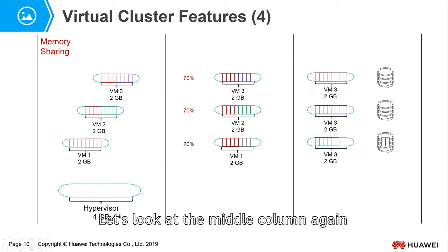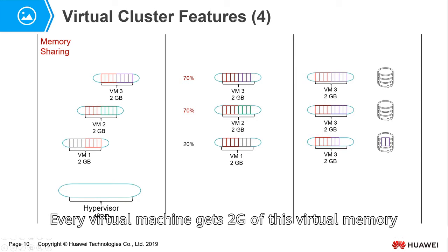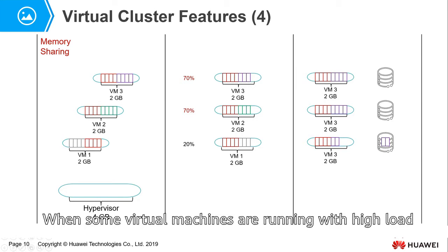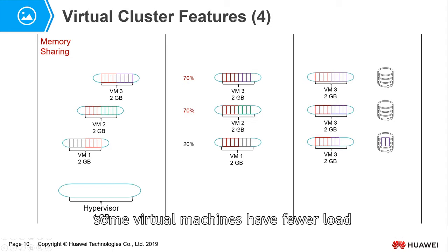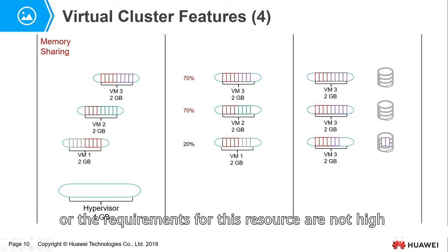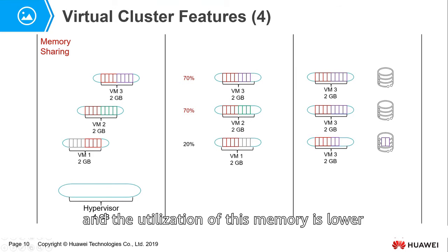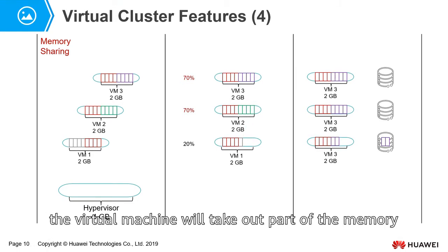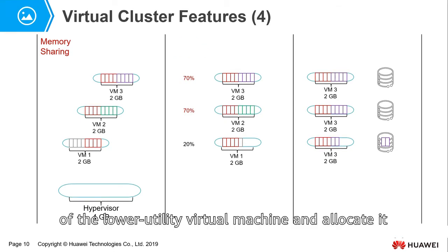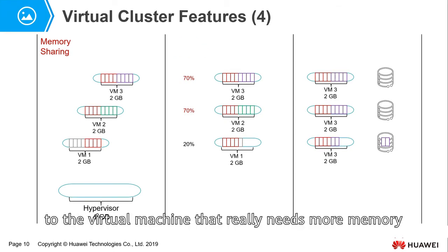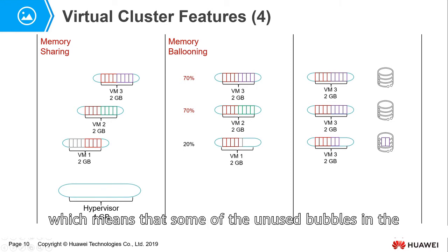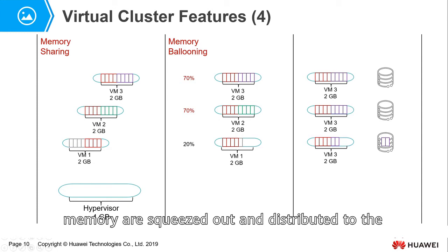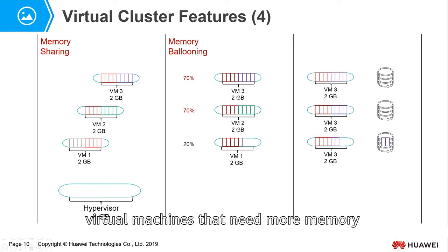Let's look at the middle column. Every virtual machine gets 2 GB of virtual memory. When some virtual machines are running with high load, their memory usage can be very high, reaching 70 to 80%, even 90%. However, some virtual machines have fewer loads and their memory utilization is lower. At this time, the system will take out part of the memory from the lower-utilization virtual machines and allocate it to the virtual machines that really need more memory. This is called memory ballooning — unused memory bubbles are squeezed out and distributed to virtual machines that need more memory.